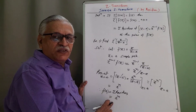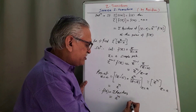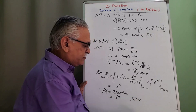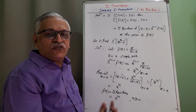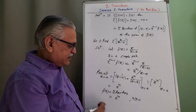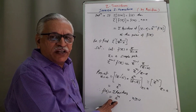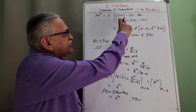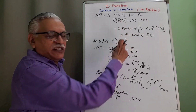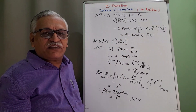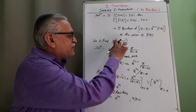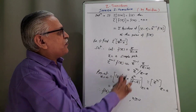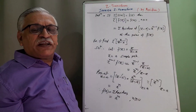Therefore F(N) = A^N for N ≥ 0. Recollecting the standard Z transform result: if the Z transform of A^N is Z/(Z − A), we get the correct answer. Therefore inverse Z transform of Z/(Z − A) is A^N, obtained by the residue technique.